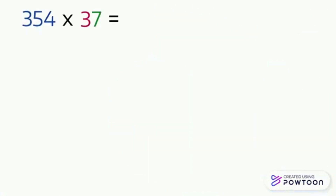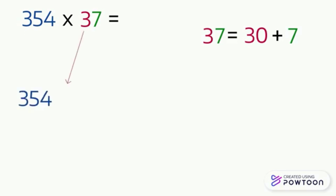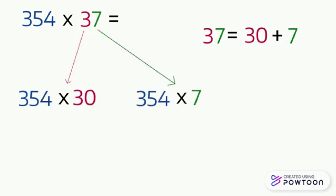Here is a multiplication problem — we will multiply 354 by 37. I remind you that 37 is 30 plus 7, which is 3 tens plus 7 ones. So multiplying 354 by 37 is the same as multiplying 354 by 30 and multiplying 354 by 7, then we add the two results after.